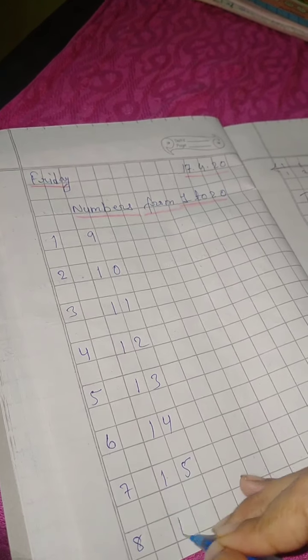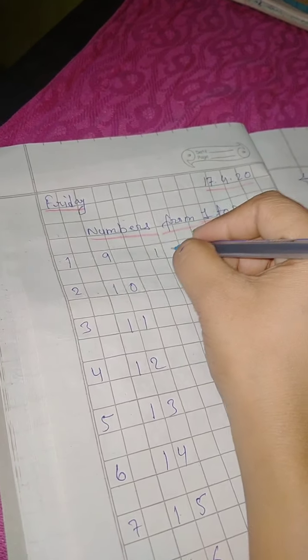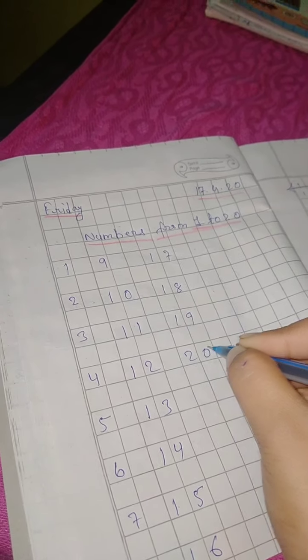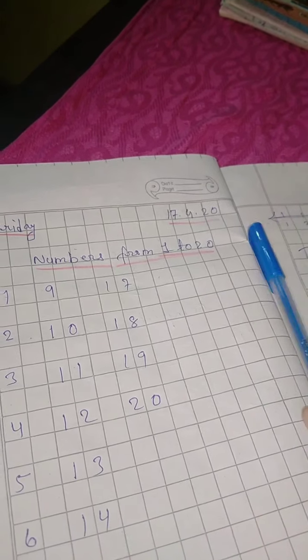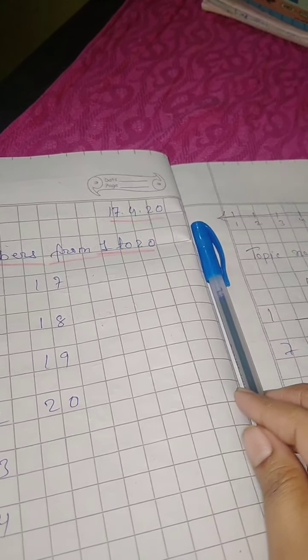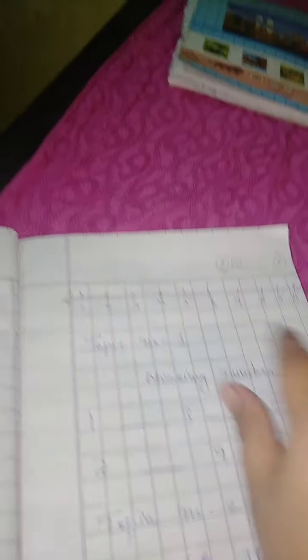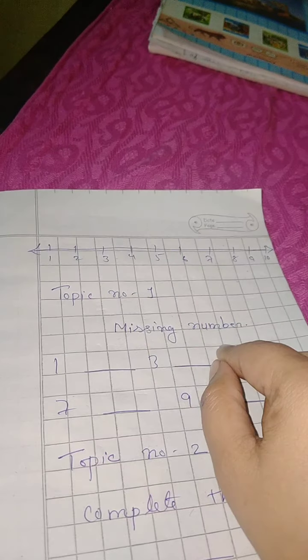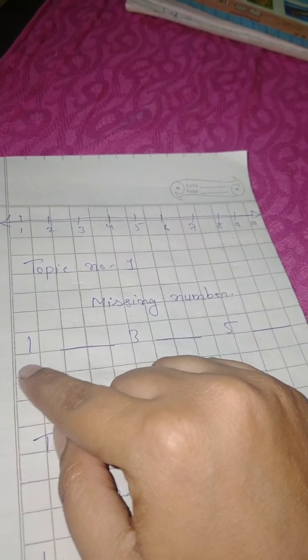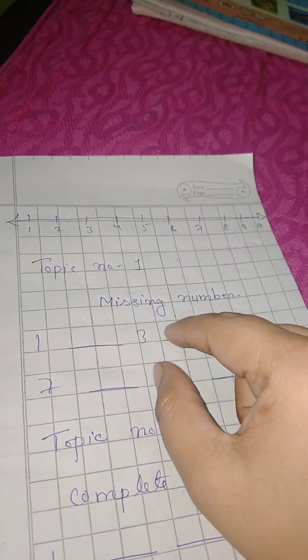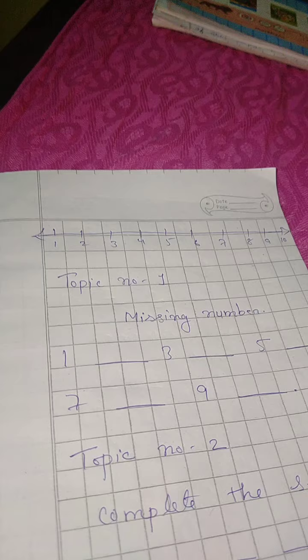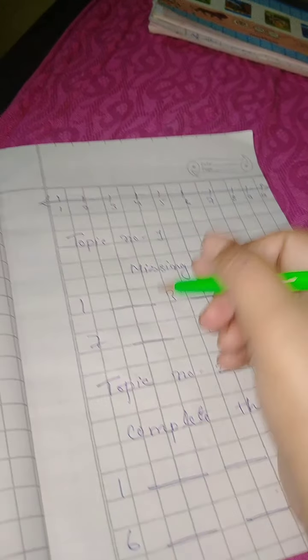Now it's time for your homework. The first topic is missing number. Missing number means that one and three, between which we will find what is missing, like this.